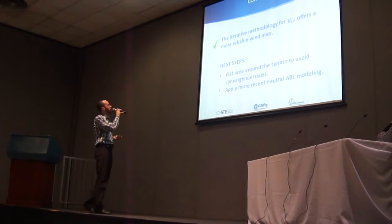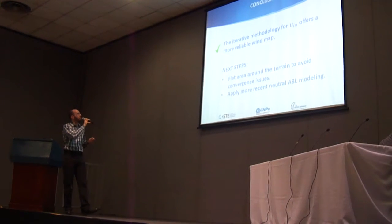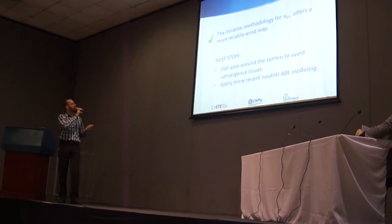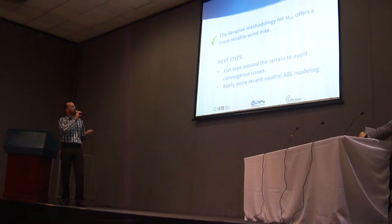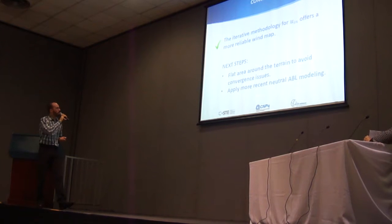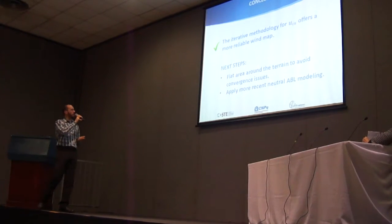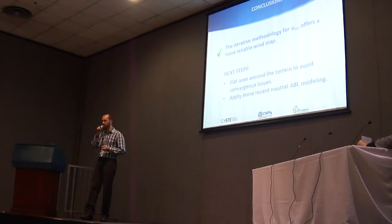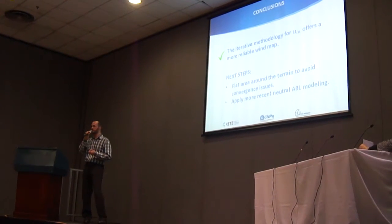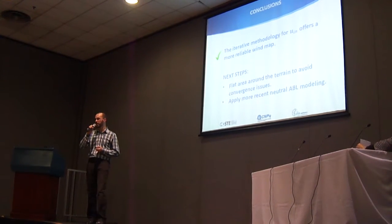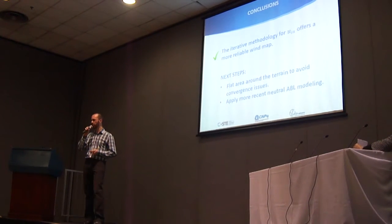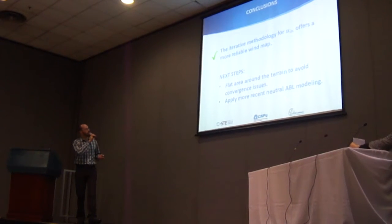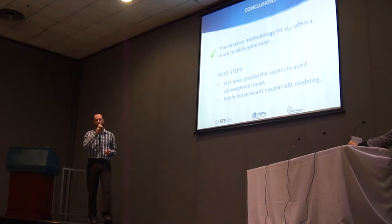As a conclusion, this iterative methodology for the inlet reference velocity offers a more reliable wind map for wind resource assessment. As next steps, it is planned to place a flat area around the terrain to avoid convergence issues that may occur if, for example, a steep hill is too close to the inlet or outlet, and to apply more recent neutral ABL models.